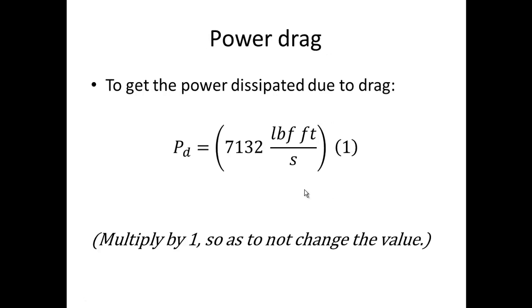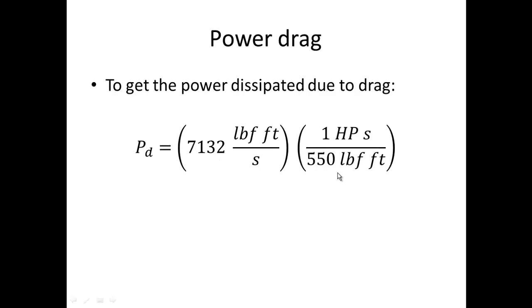Now to get power dissipated due to drag, we want to multiply by 1 so we're not changing the value of it. We put in that conversion constant that we just derived. We start canceling units. Cancel the pound force, cancel the feet, cancel the second. And voila, 7132 divided by 550 is about 13 horsepower. So that gives us a feel for what the drag power is in that scenario.